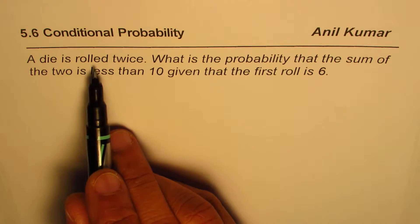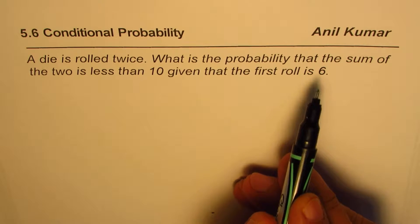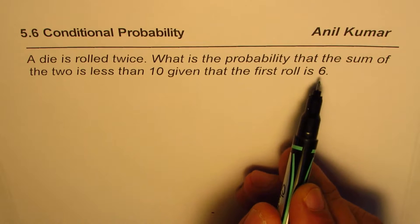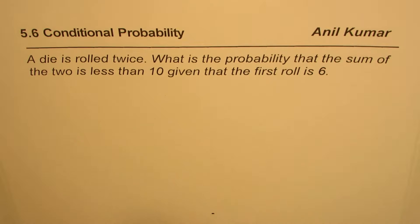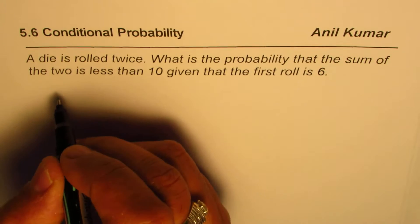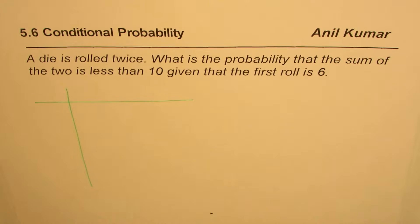We are rolling a fair six-sided die two times. The first time we roll, we get 6. The question is: what is the probability that the sum of the two rolls is less than 10? You need to read the question a couple of times to exactly understand what is being asked. A die is rolled twice and we need to find the probability of getting a sum less than 10 when the first roll is 6.